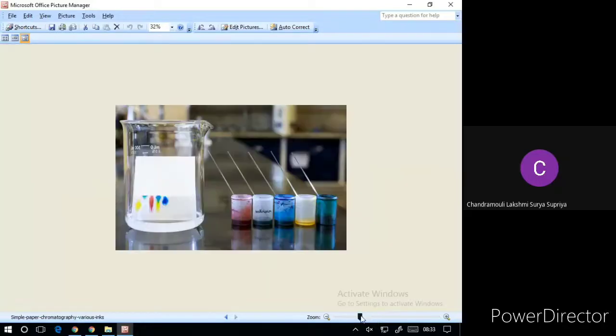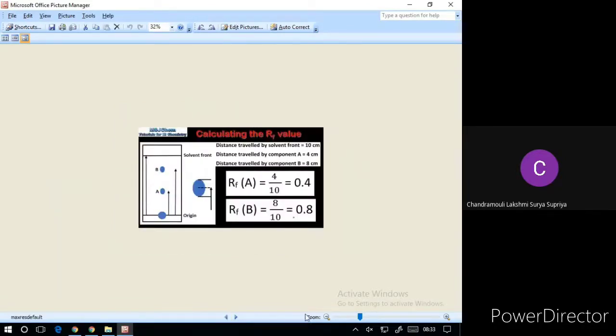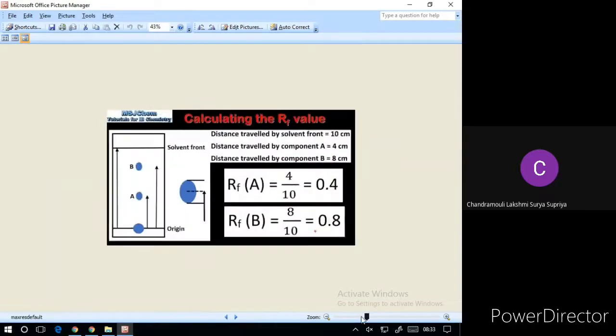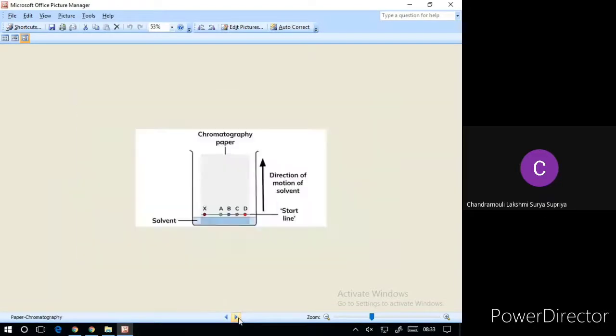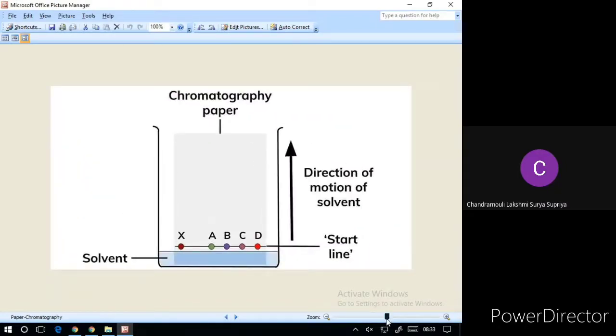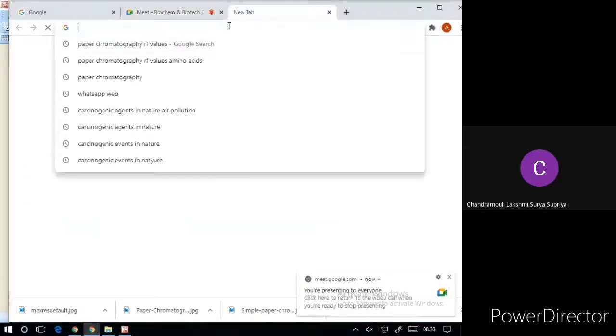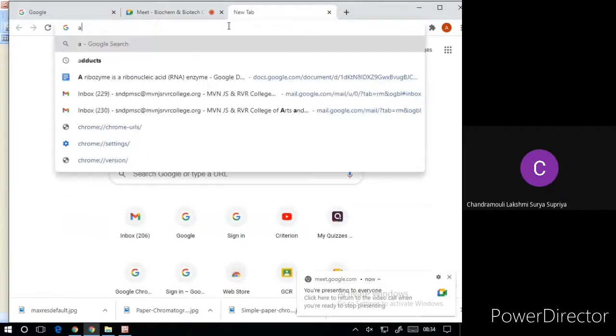Types of paper chromatography include descending chromatography, where the mobile phase is placed in a solvent holder at the top and the solvent flows down the paper, and ascending chromatography, where the solvent travels up the chromatography paper. Both types are used for the separation of organic and inorganic substances.